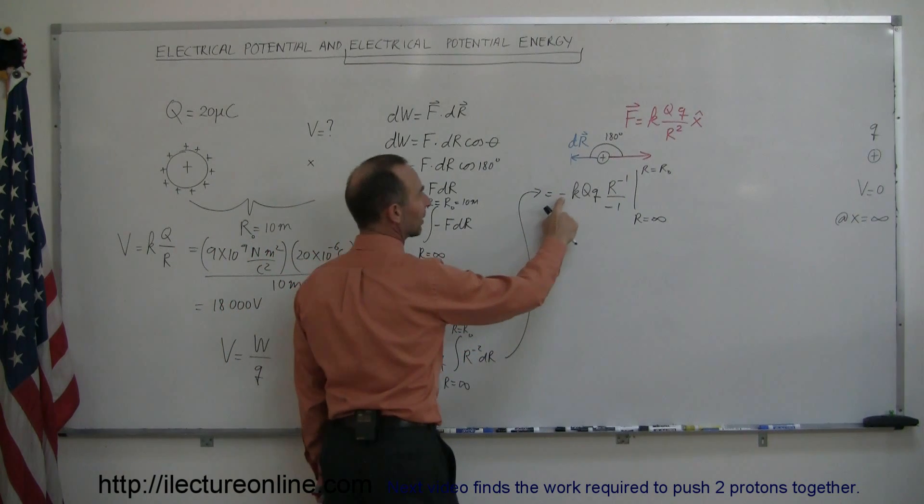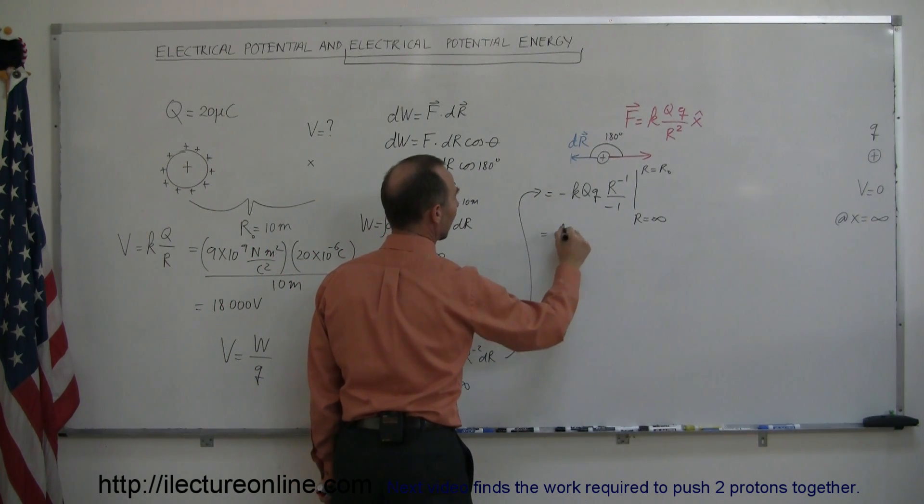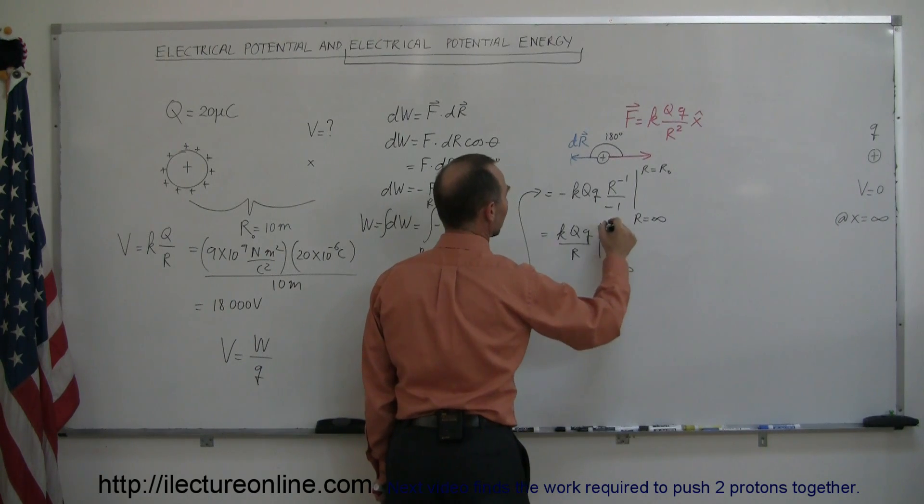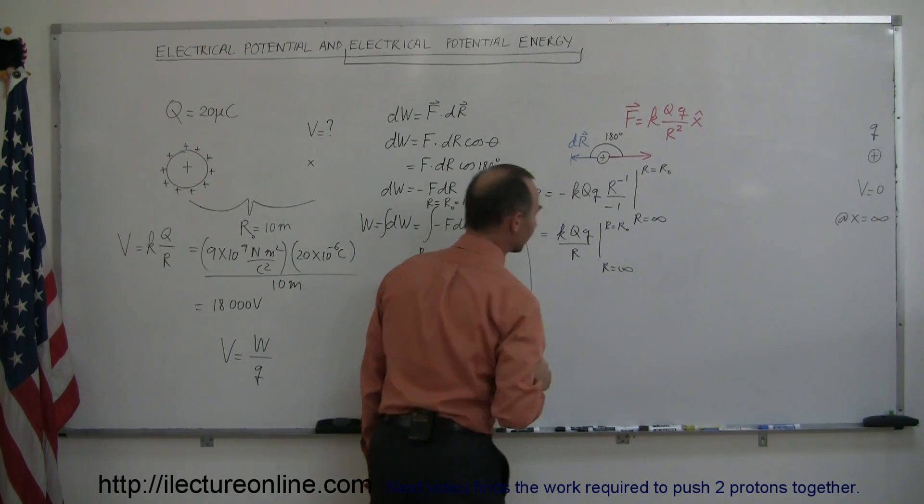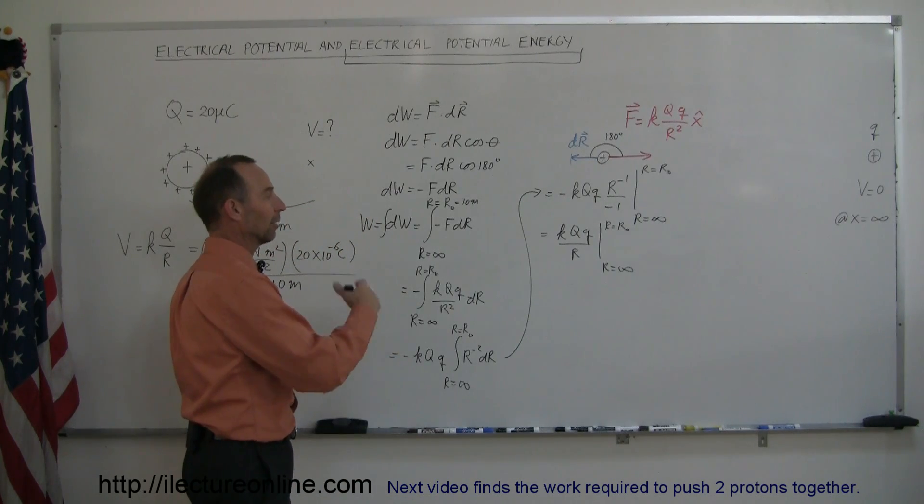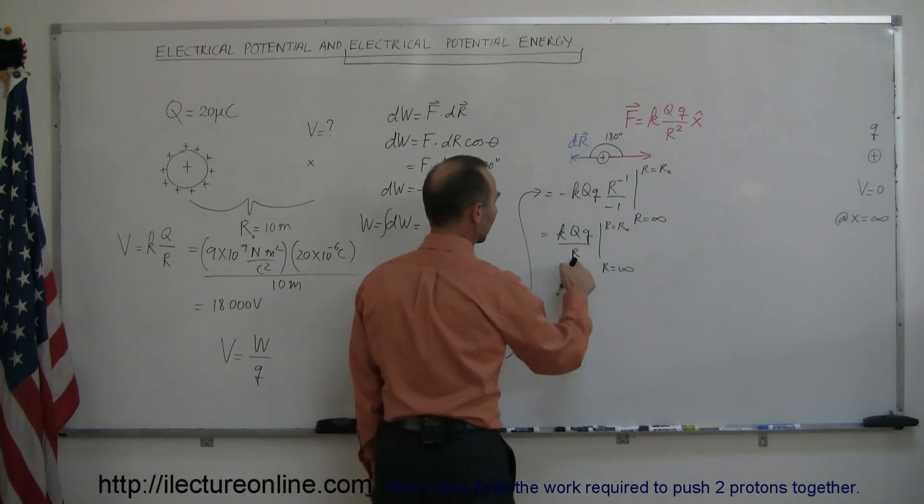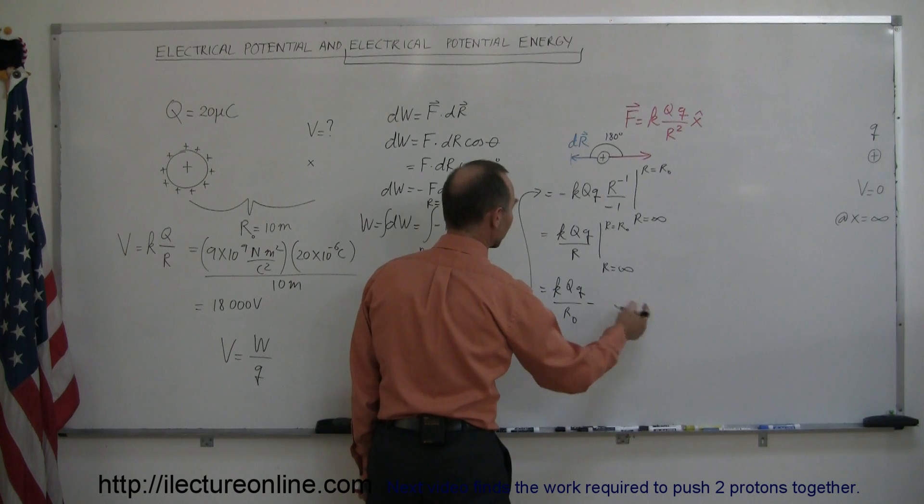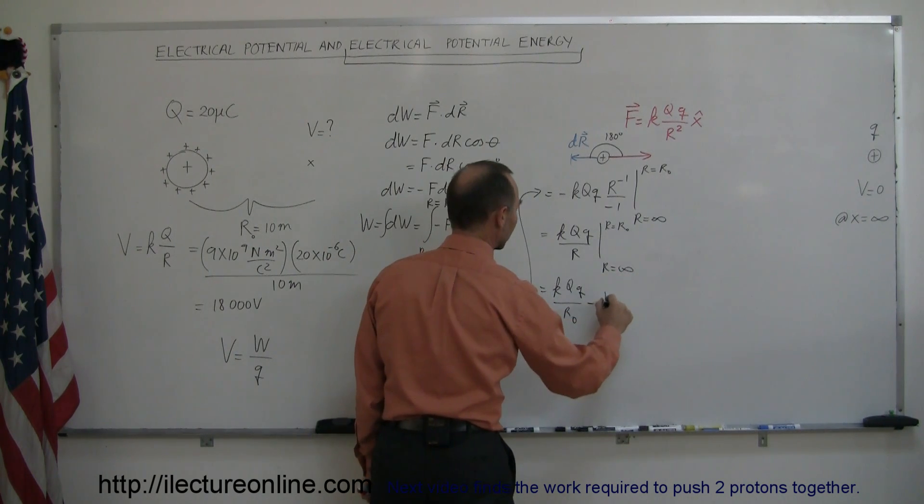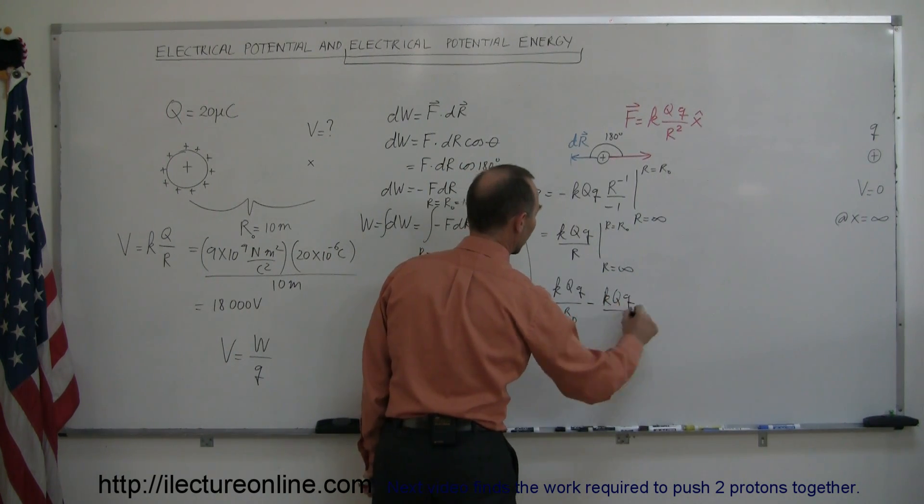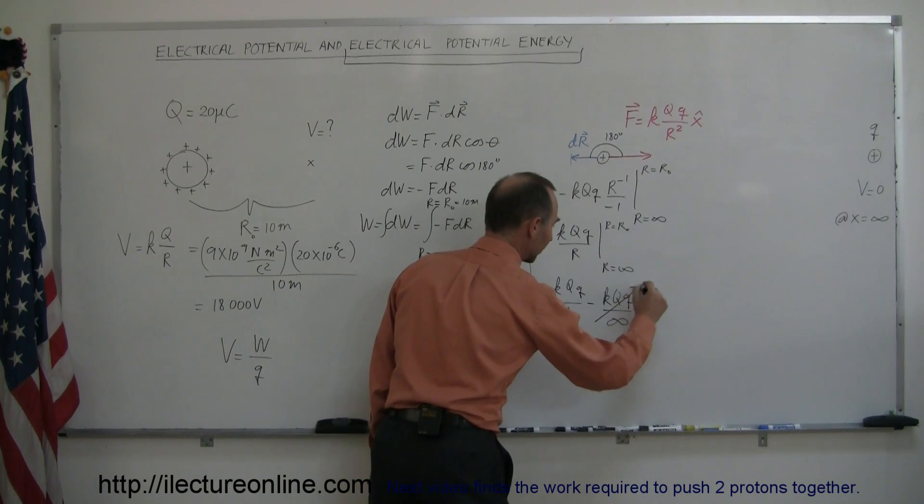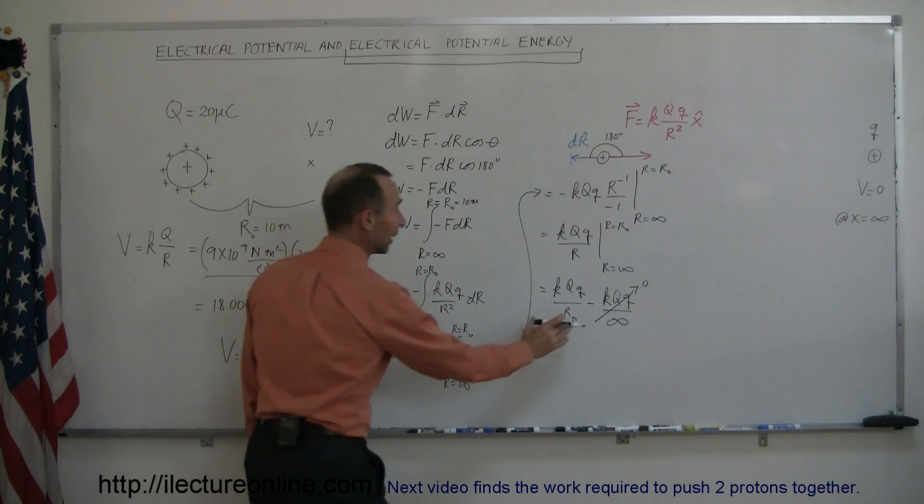You can see that this negative sign cancels out this negative sign, so we can write this as k q little q divided by r and evaluated r equals infinity to r equals r sub-naught. Now we plug in the upper limit and then subtract when we plug in the lower limit. So when we plug in the upper limit for r, we get k q little q over r sub-naught minus when we plug in the lower limit, which is k q little q over infinity. Of course anything divided by infinity is equal to 0, so this term cancels out, and we're left with this.